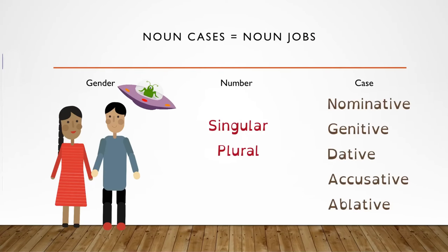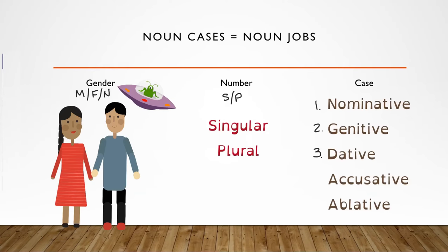In lesson one, you learned three things you need to know about nouns. Let's review. First we had gender, which could either be masculine, feminine, or neuter. And then there was number — singular or plural. And then we talked about all the different cases or jobs that nouns can have. We have nominative, which is the subject; genitive, which are those possessive noun adjectives; dative, the indirect object and his brother accusative, the direct object; and then finally oblative, the object of the preposition. Make sure you memorize these things.